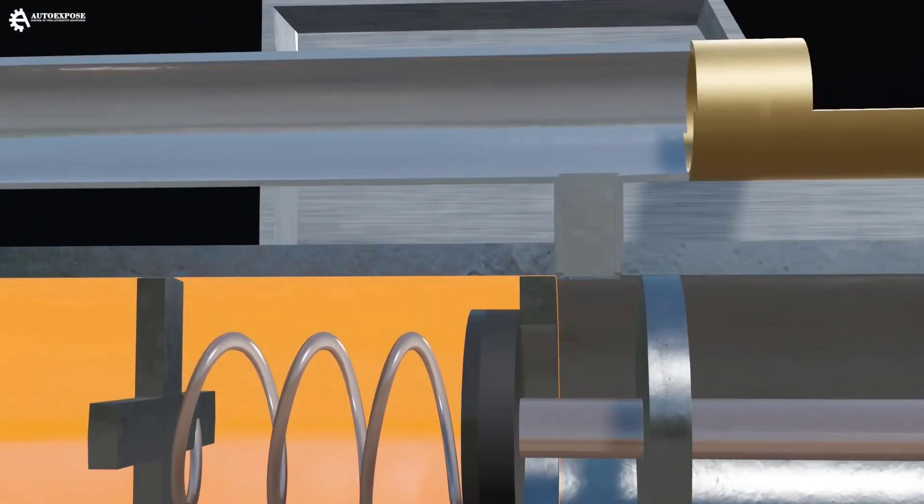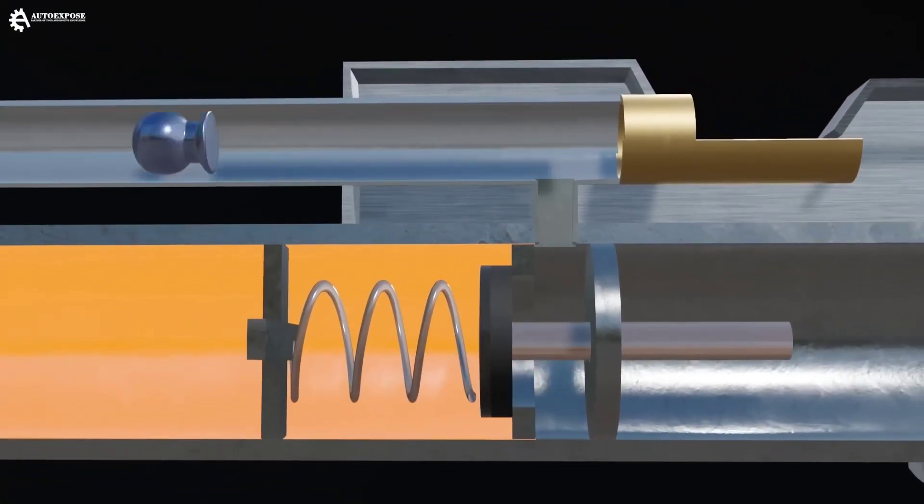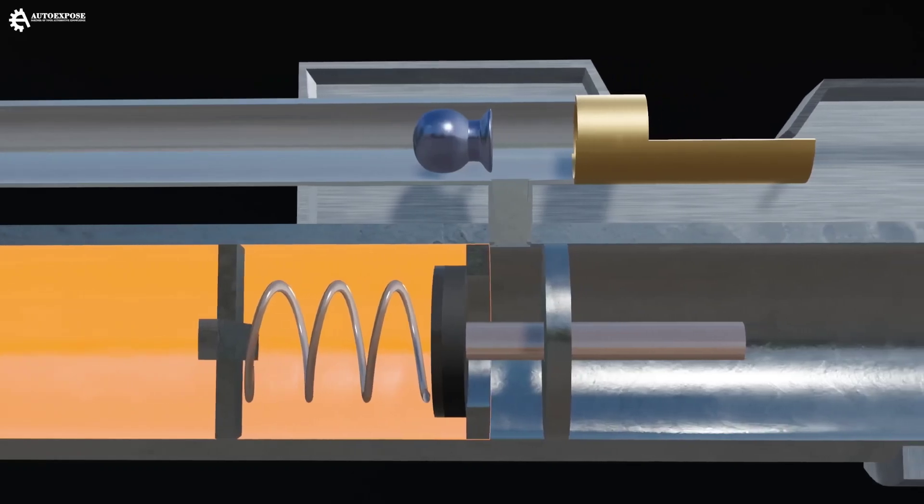So, if this valve is open, air pressure will enter the small tube and push the bullet into the bullet tunnel. Then, what is the mechanism for opening the valve?